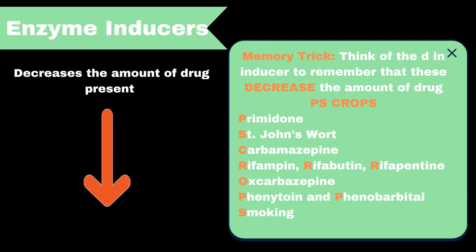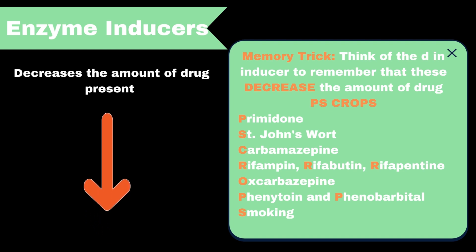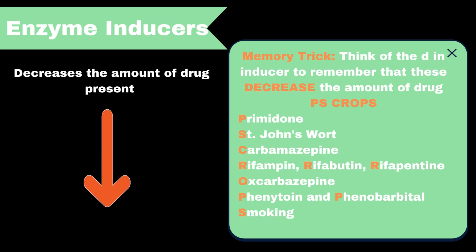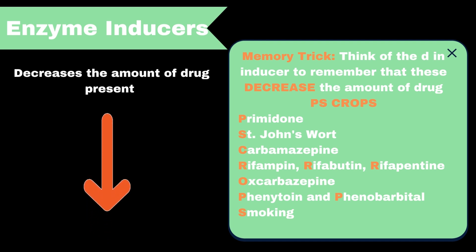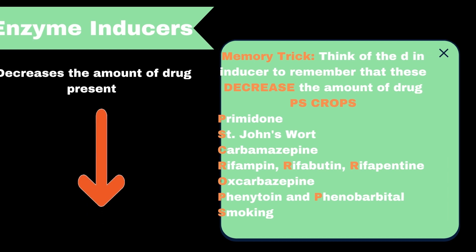A good memory trick for these is by memorizing PS CROPS. This stands for P for primidone, S for St. John's wort, C for carbamazepine, R for drugs that start with rifa like rifampin, O for oxcarbazepine, P for phenytoin and phenobarbital, and lastly S for smoking.